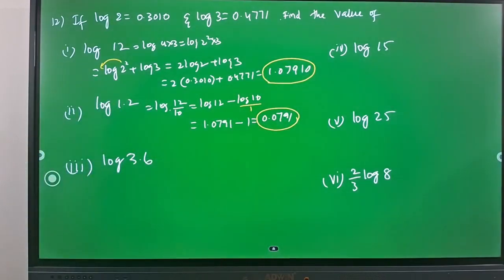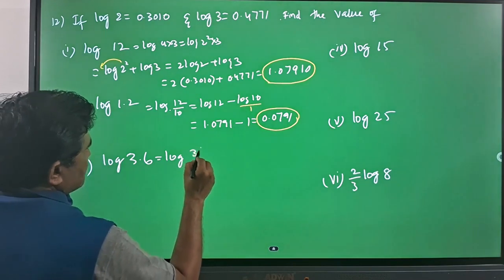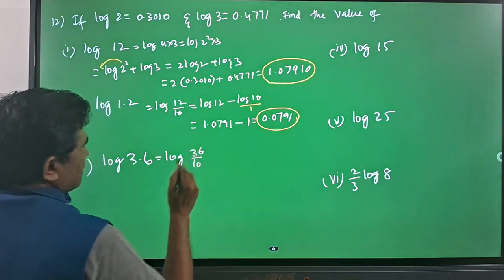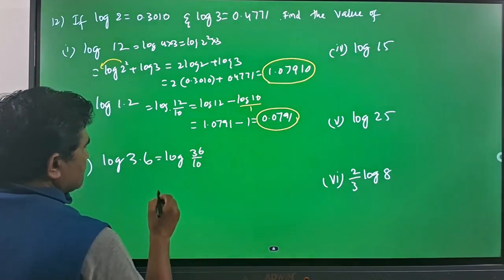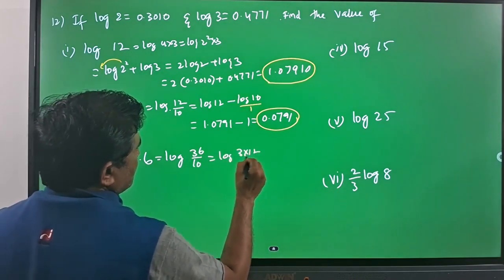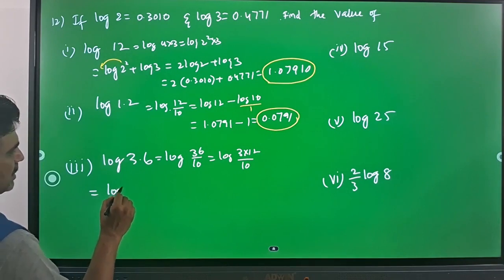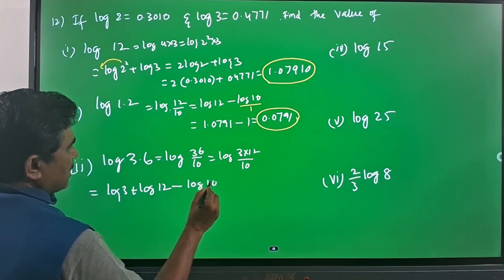Now come to log 3.6. This is also the same: 3.6 I can write as log 36 by 10. 36 can be written as 12 times 3. So here log 3 into 12 by 10. If you expand that term, you will have log 3 plus log 12 minus log 10.